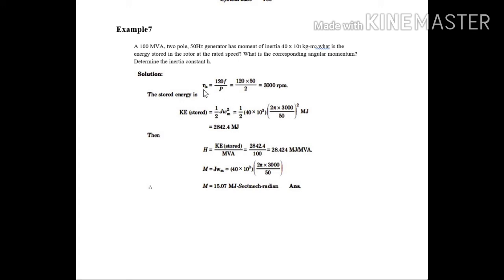For that, I need synchronous speed, whose formula I know it is 120 F by P. I got the answer as 3000 RPM. Now substitute this for the omega M. The formula we are knowing 2 pi Ns by frequency. Substitute these values and we get the answer as 2842.4 mega joules. This is the first, that is the kinetic energy stored.